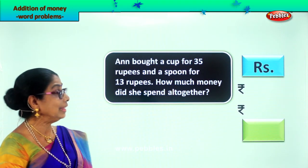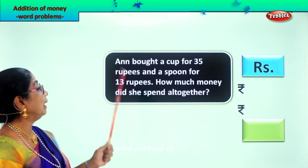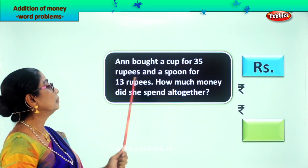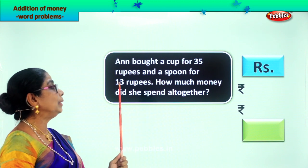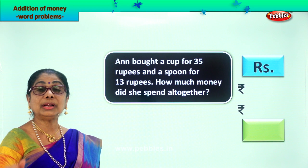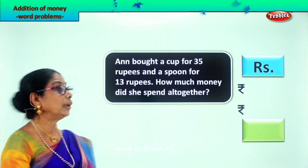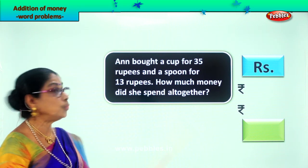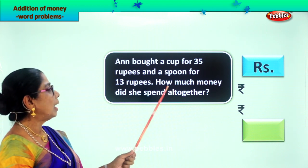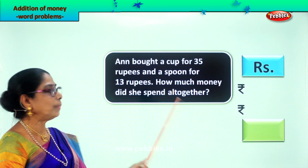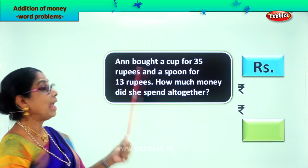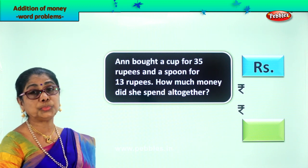Let's take a new sum. Anne bought a cup for rupees 35 and a spoon for rupees 13. She bought a cup for 35 rupees and a spoon for 13 rupees. The question is: how much money did she spend altogether? We must find out how much Anne spent buying a cup and a spoon.